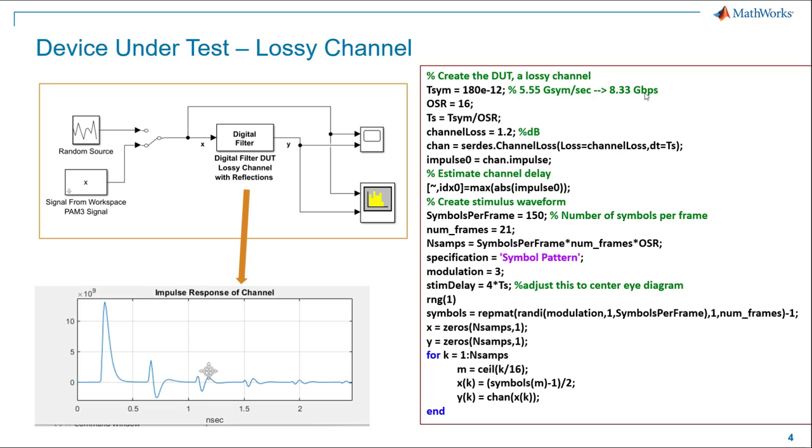And with an oversampling rate of 16, that came out to be so many samples of simulation. In this case, I've got PAM3 symbols at a particular symbol rate of 5.55 gigasymbol per second. That corresponds to about 8.33 gigabits per second because you've got 1.5 bits per symbol with PAM3. I'm oversampling here because really this is a discrete time approximation of a continuous time system, so I need some reasonably high oversampling rate. And then I use the randi function to create the PAM3 symbols. I've got three levels, basically 0, 1, and 2.